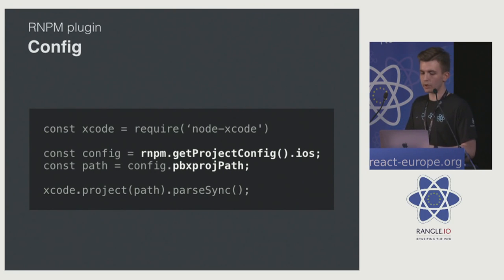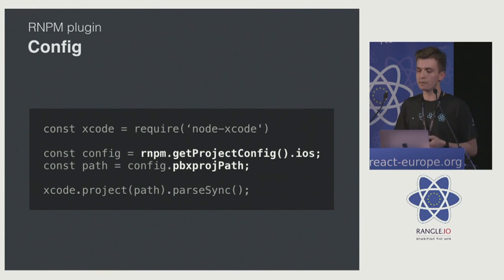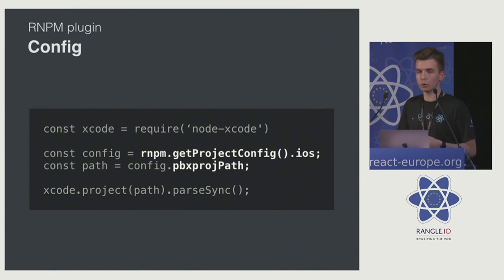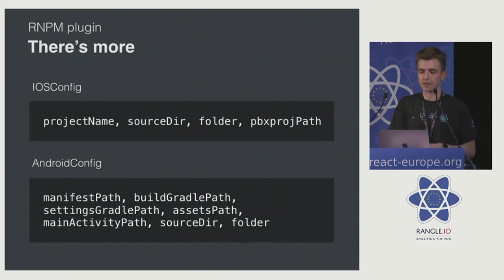In this example, we are getting the project config, accessing the iOS property, and using the xcodeProjectPath to parse the project and get some properties. That's how RMPM link works under the hood — we do not use any private API. All of our plugins are built on top of the public API we export, so you can do pretty much everything you want depending on your project's use case.